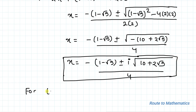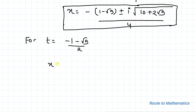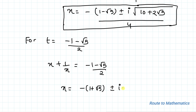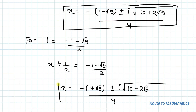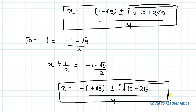Similarly for t equals minus 1 minus root 5 by 2, we have x plus 1 by x equals minus 1 minus root 5 by 2. Applying the same procedure we get x equals minus of 1 plus root 5, plus or minus iota root under 10 minus 2 root 5, divided by 4, which are the 4th and 5th solutions of x. So overall we get 4 imaginary solutions and 1 real solution, which is x equals 1.